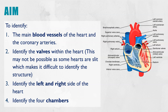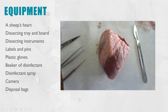The aim for the heart dissection is to be able to identify the main blood vessels you learn in topic three: the vena cava, the pulmonary arteries, the pulmonary veins, and the aorta. Can you identify the valves within the heart — though sometimes this isn't possible if hearts from the butchers have been slashed open and cut through the valves. Can you identify the left and right side of the heart, and finally the four chambers? You may be given slightly different aims by your school.